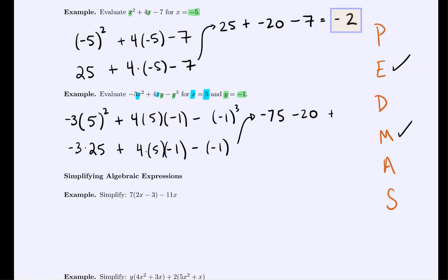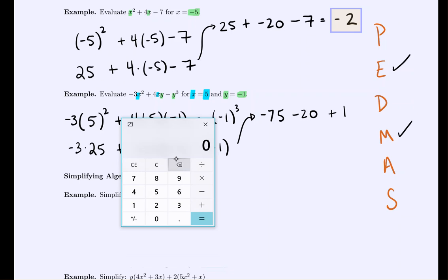Minus a negative does become a positive. Now we just reference our calculator. We have negative 75 minus 20 plus 1 should give us negative 94.